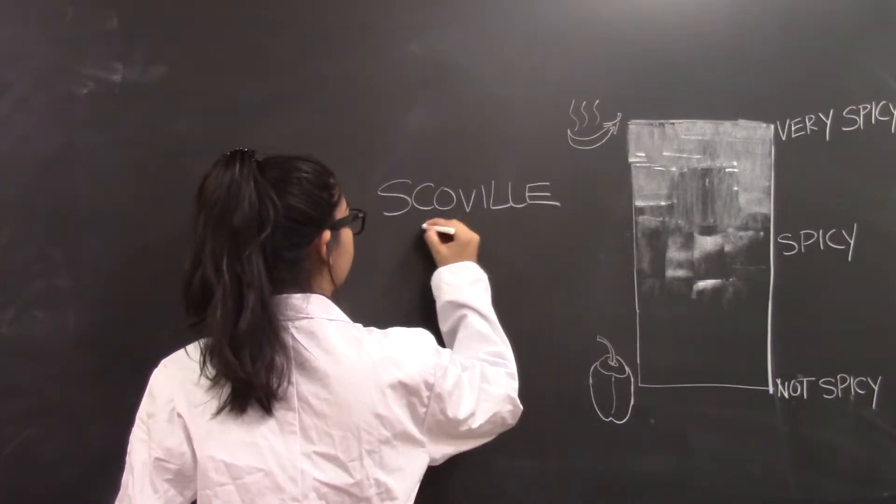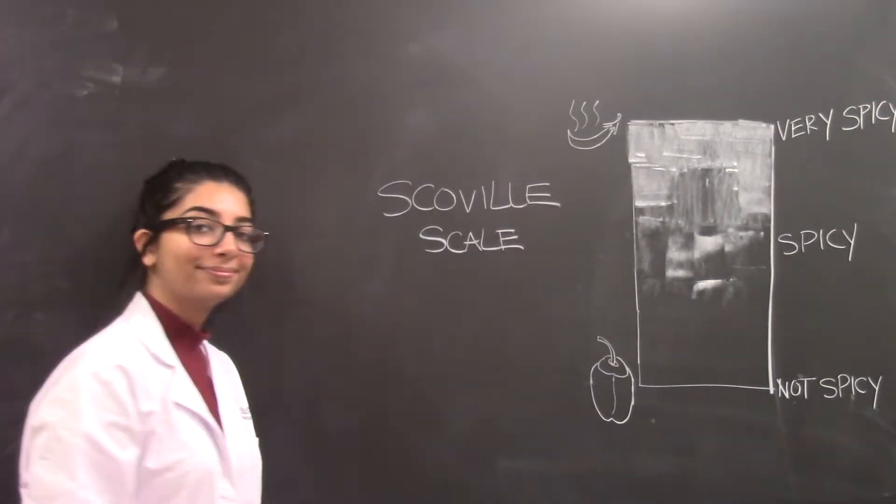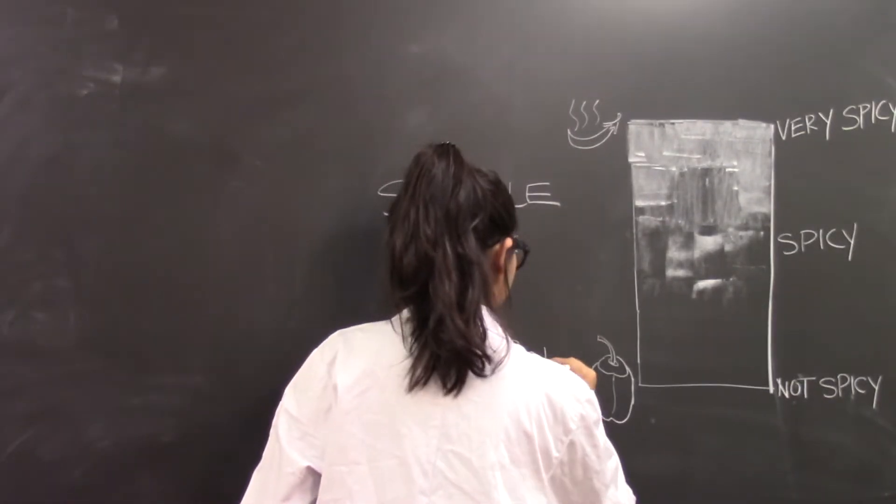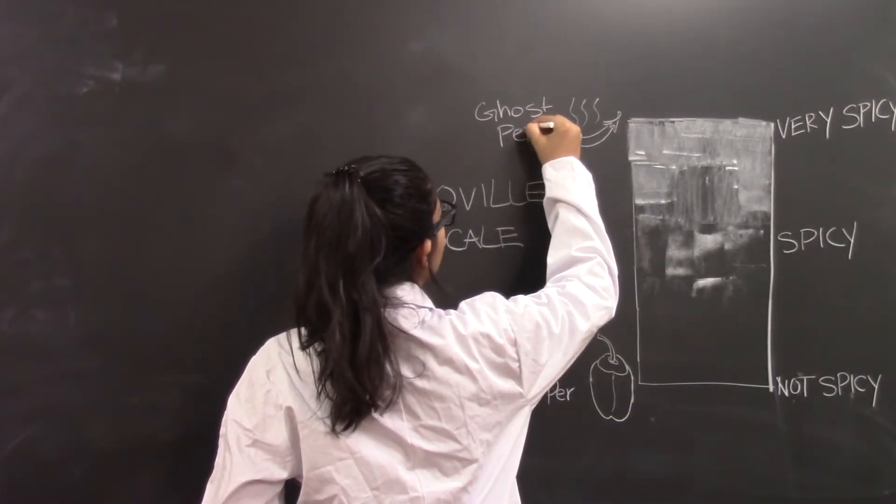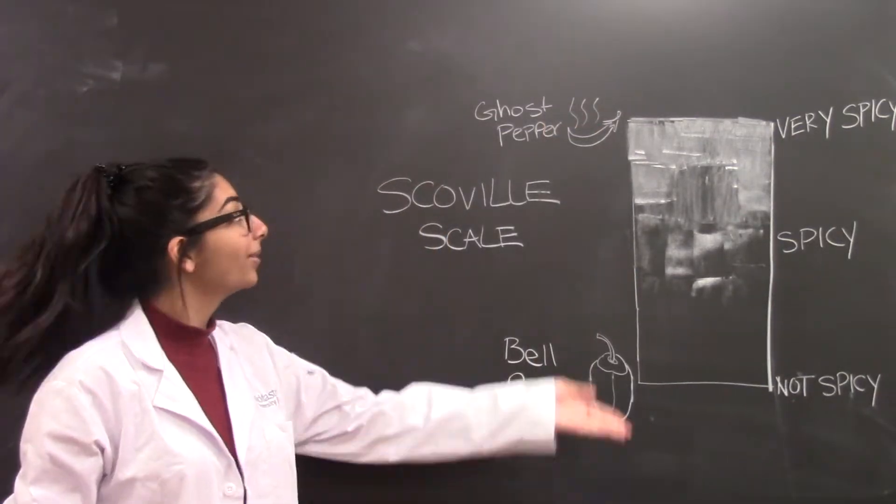The Scoville scale, also known as the spiciness scale, is where the burn of capsaicin is estimated in units known as Scoville heat units. Bell peppers score zero on the Scoville scale, while ghost peppers are at a high of 1 million units.